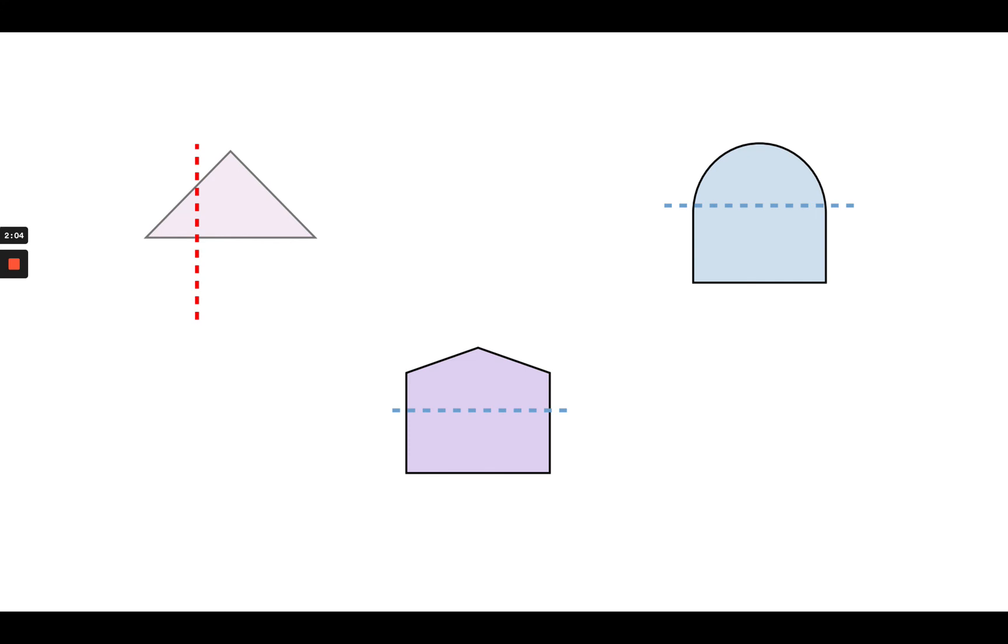And so this last shape here, again, that dotted line would not show symmetry. But if I had a vertical line right through the middle, it would be a line of symmetry.